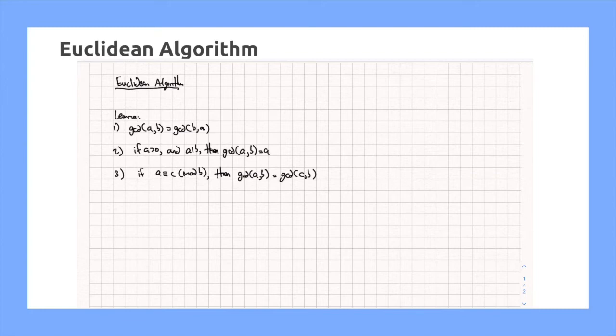The second part states that if A is greater than 0 and A divides B, then the GCD of A and B is equal to A. This makes sense because if you assume for the sake of contradiction that the GCD is greater than A, then that cannot possibly divide A because it's greater than A.